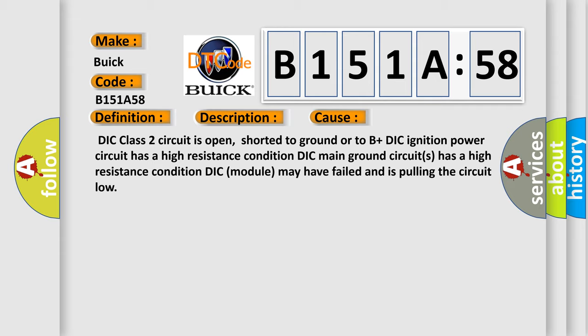DIC class 2 circuit is open, shorted to ground or to B plus. DIC ignition power circuit has a high resistance condition. DIC main ground circuits has a high resistance condition. DIC module may have failed and is pulling the circuit low.